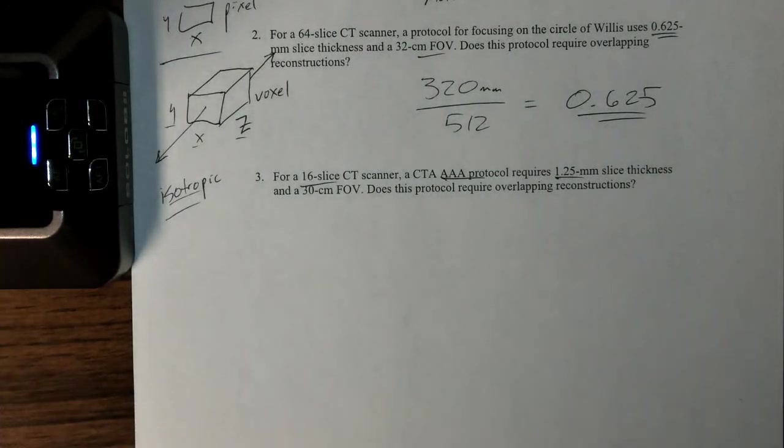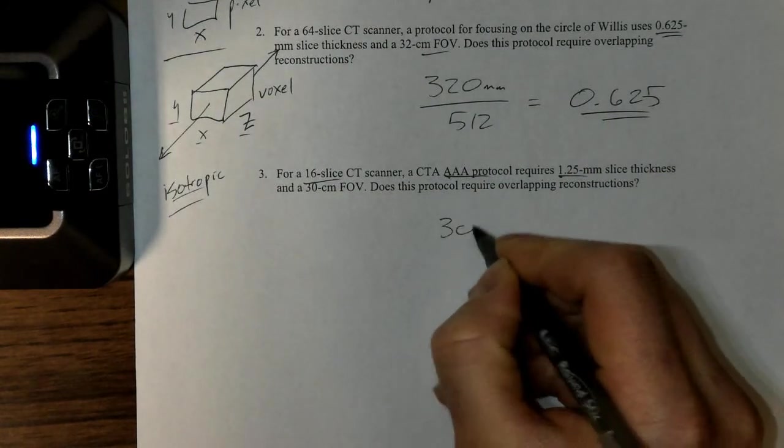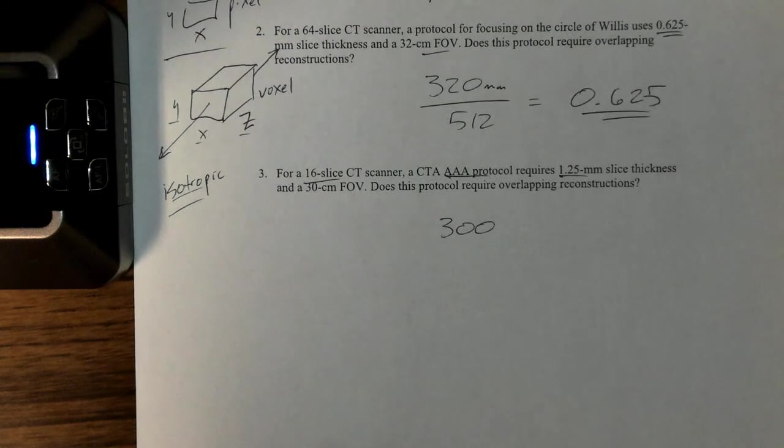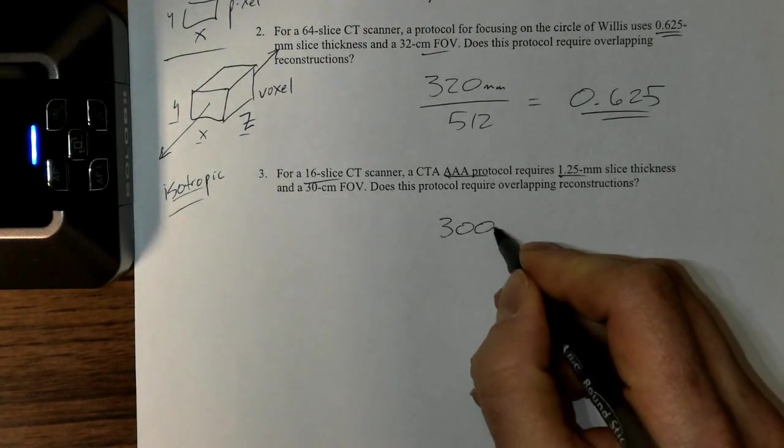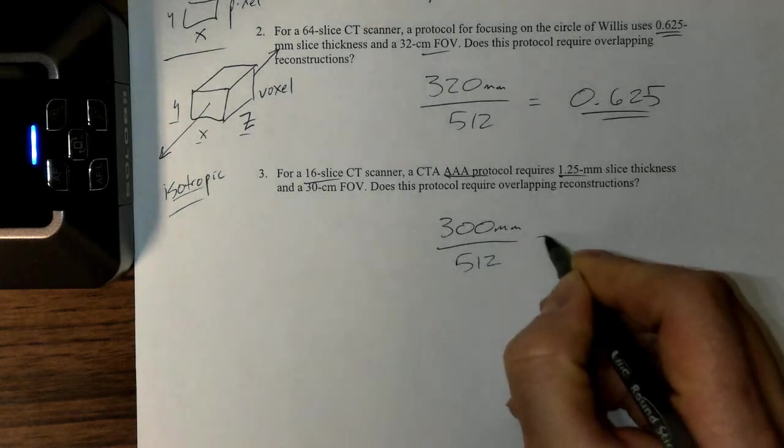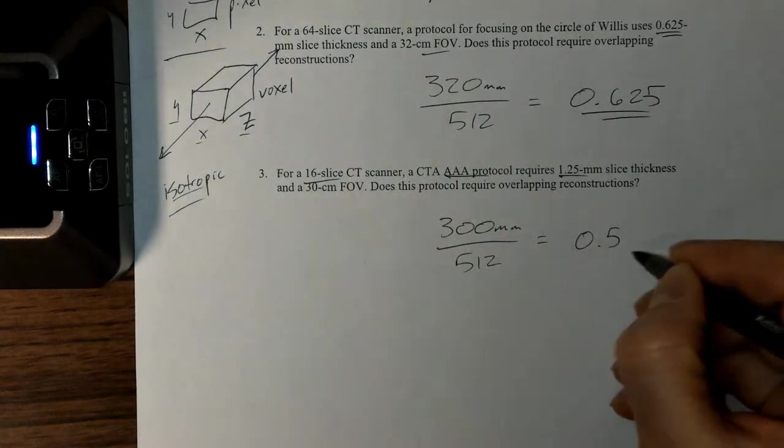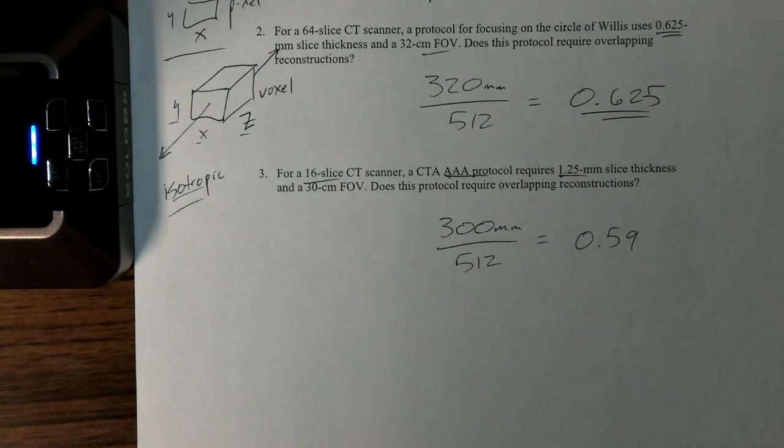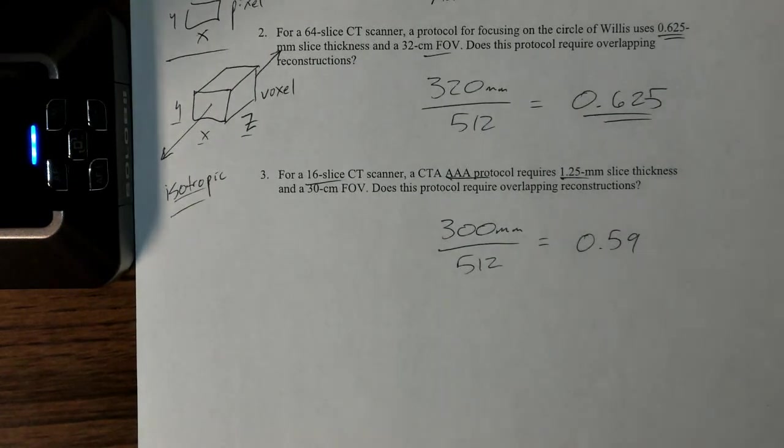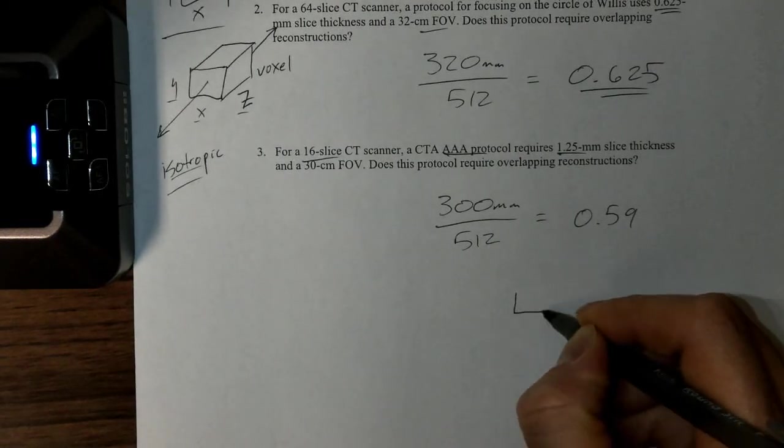Let's set up our formula. It's going to be, in this case, 300 millimeters—that's for the field of view—divided by 512. According to my math, that gives me 0.59. That is about half of the slice thickness.